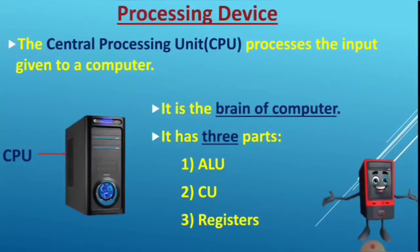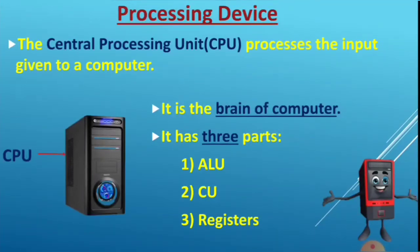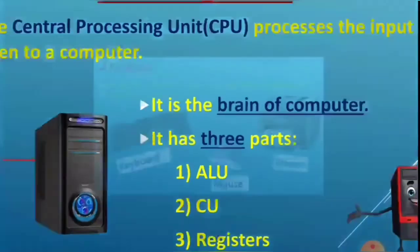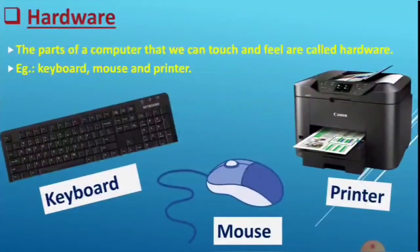Next is the processing device. The processing device is the CPU, which stands for Central Processing Unit. It processes the data and provides us output — that is why it is called a processing device. It is the brain of the computer. The CPU has three parts: ALU, CU, and registers.